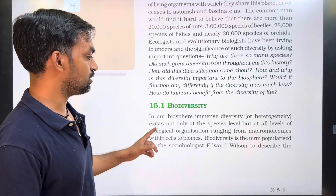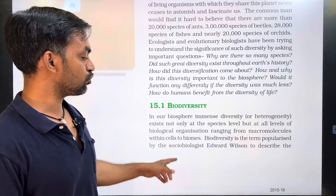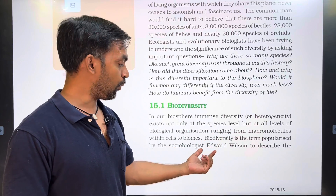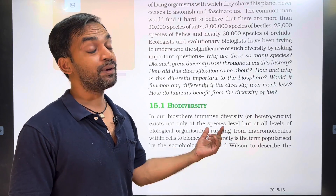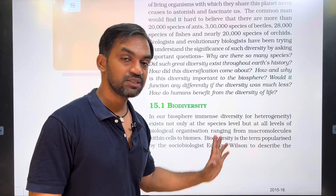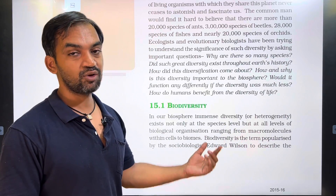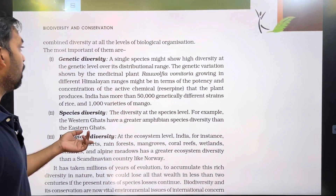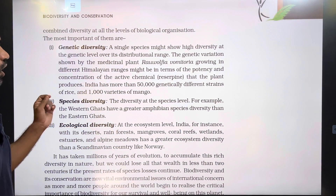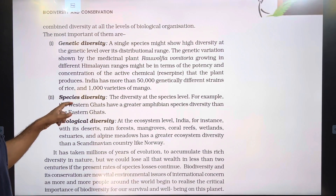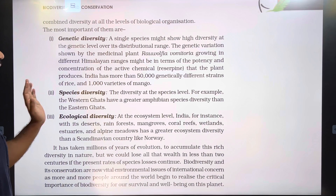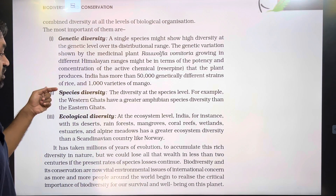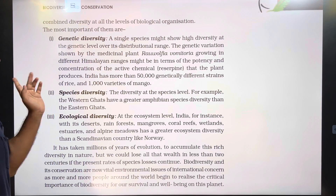Biodiversity is the term popularized by the sociobiologist Edward Wilson to describe the combined diversity at all levels of biological organization. The most important levels are three: Genetic diversity, Species diversity, and Ecological diversity.